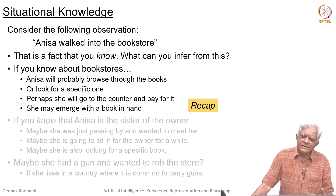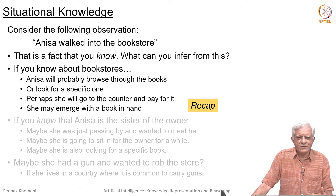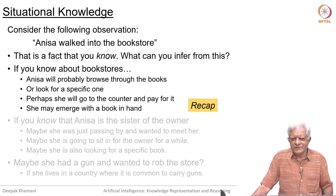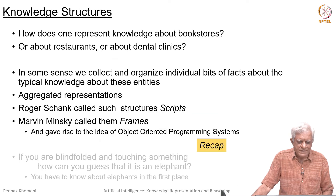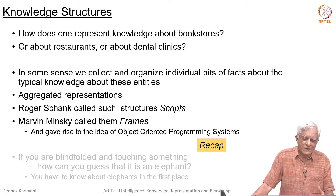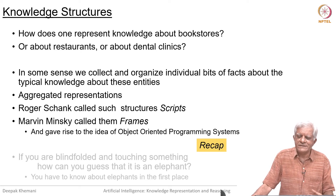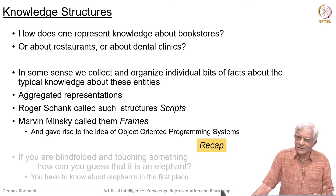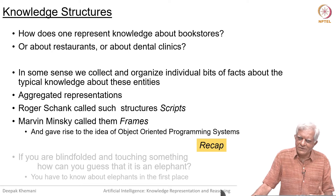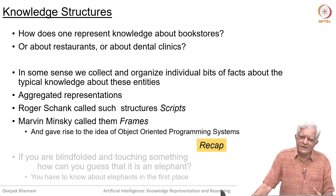Now, like the program Margie, what we are going to look at today is also focused towards understanding stories. We use the phrase 'knowledge structures' to describe how you put together different pieces of information into one structure. How do you represent knowledge about restaurants or about dental clinics and so on? All these are stereotypical situations in which the same kind of thing happens over and over again. So we collect and organize individual bits of facts about typical knowledge about these entities and create these aggregated representations.